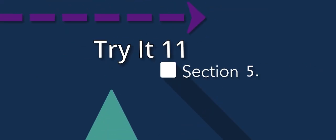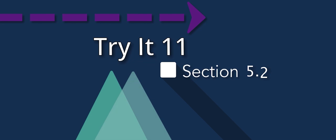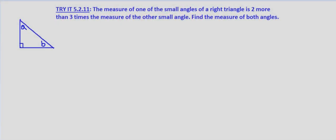In this problem we're told that the measure of one of the small angles of a right triangle is two more than three times the measure of the other small angle, and we're asked to find the measure of both angles.